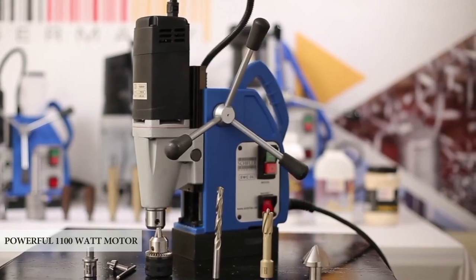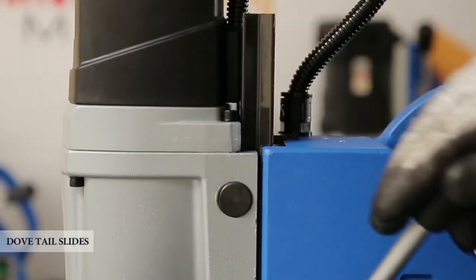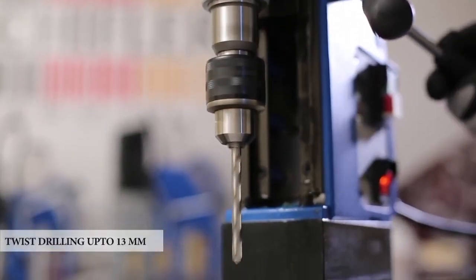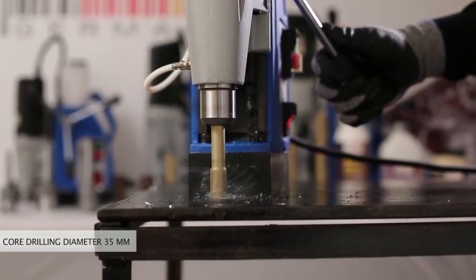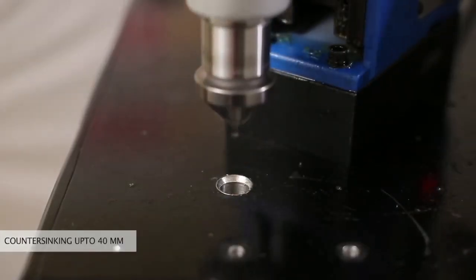Powerful 1100 watt motor. Dovetail slides for precise and smooth movement during operations. Twist drilling up to 13mm, core drilling diameter 35mm up to 50mm cutting depth, and counter-sinking up to 40mm.